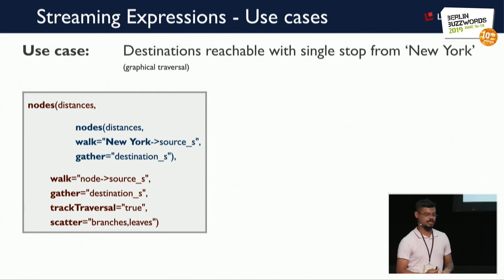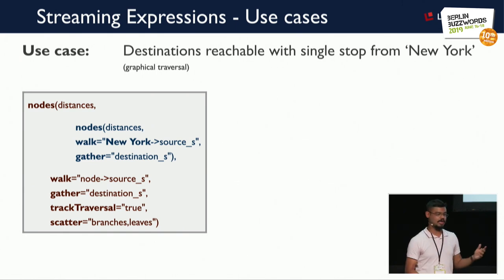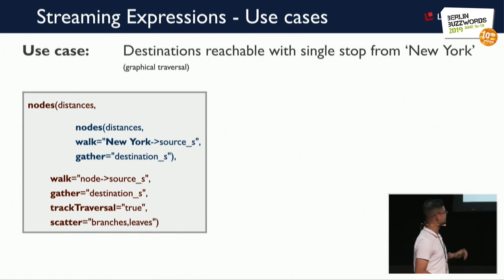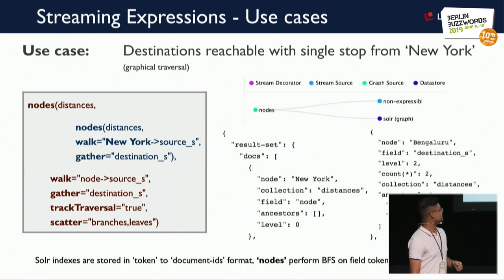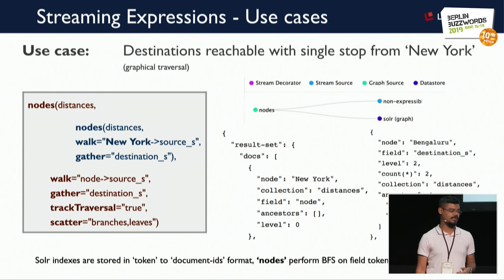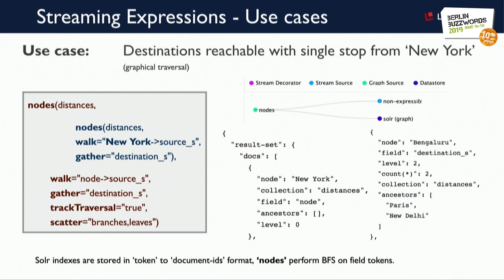The inner node streaming expression takes the Solr collection where the data is hosted — 'distances' — puts New York at the root node, and gathers all immediate destinations from New York. These destinations then become input for the outer nodes streaming expression. In the result set, New York is at level zero, and Bengaluru is at level two — one step away — with ancestors Paris and New Delhi. So you can fly from New York to New Delhi to Bengaluru, or from New York to Paris to Bengaluru.